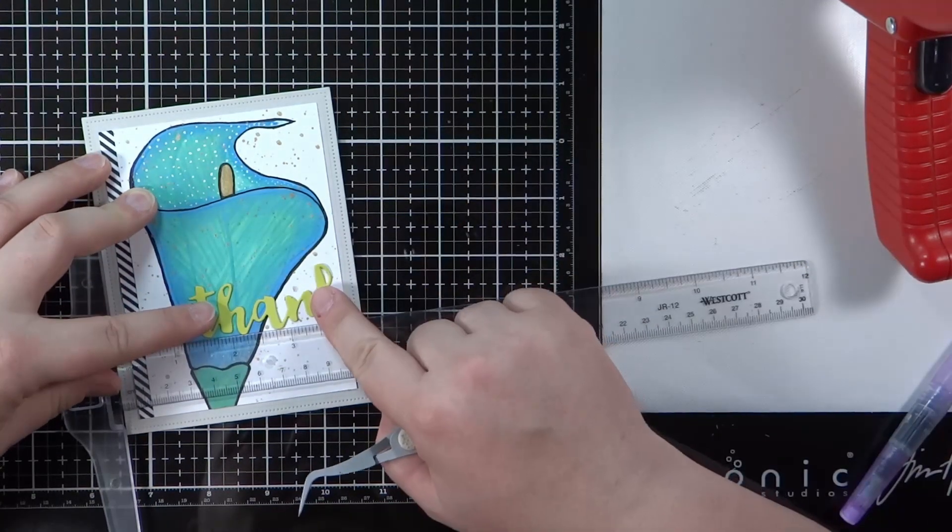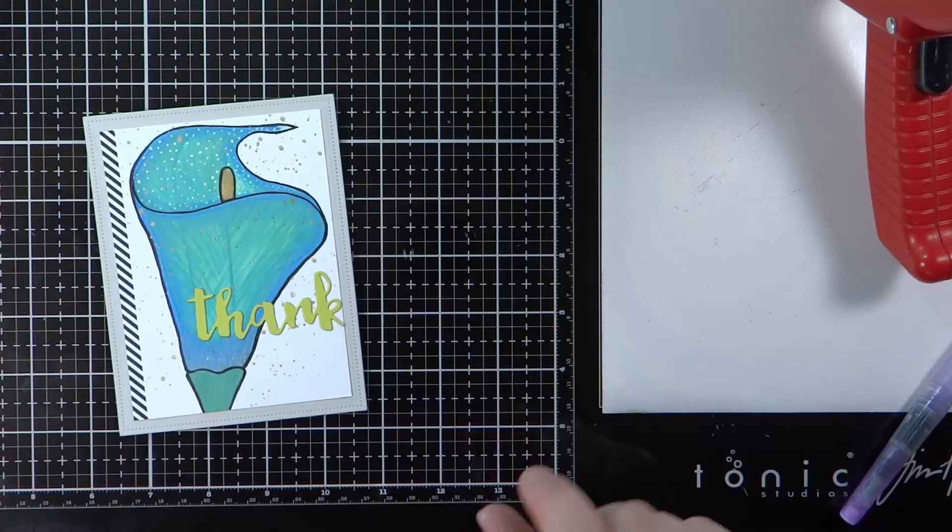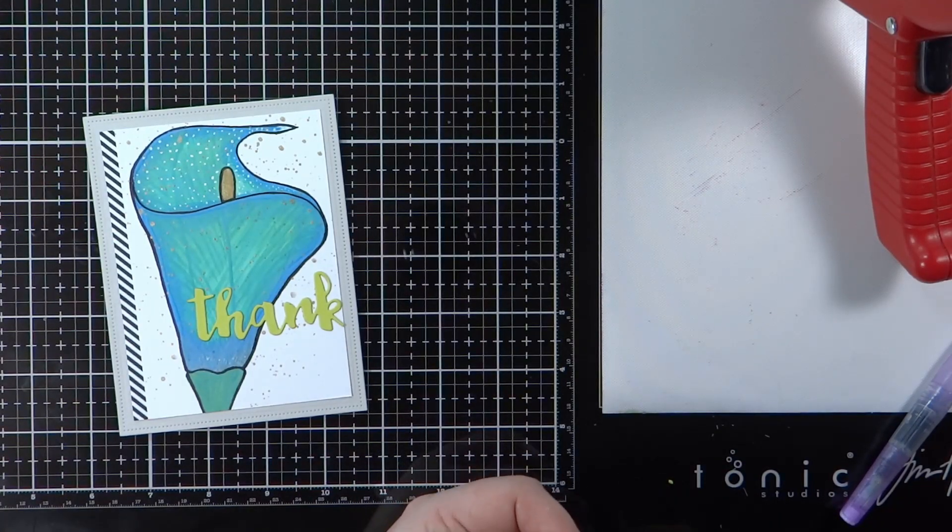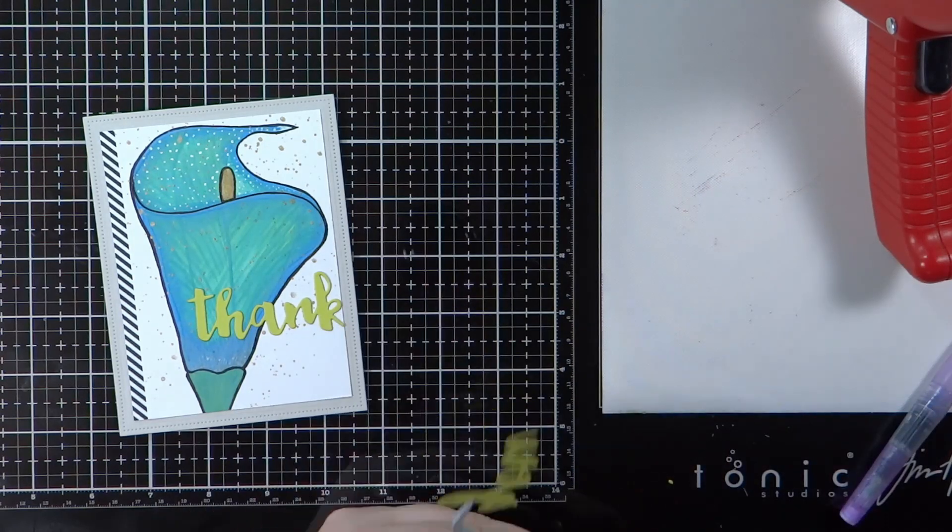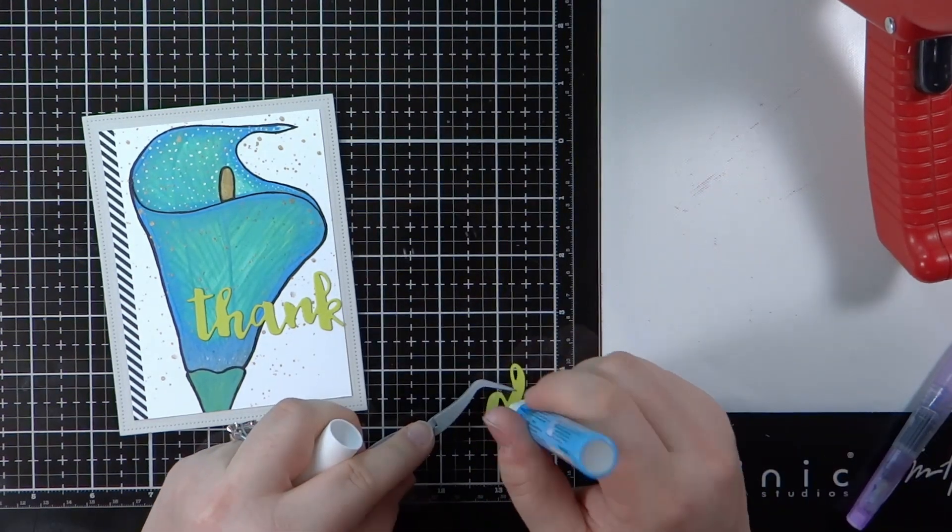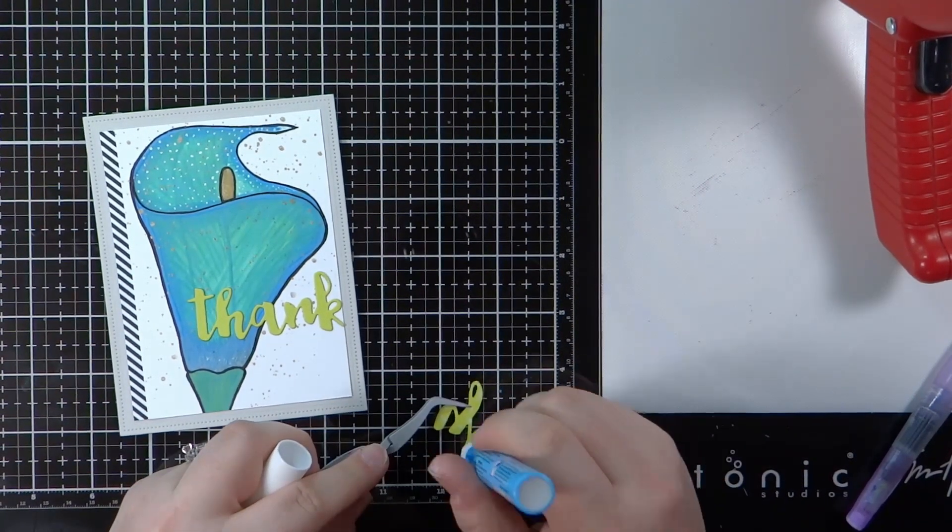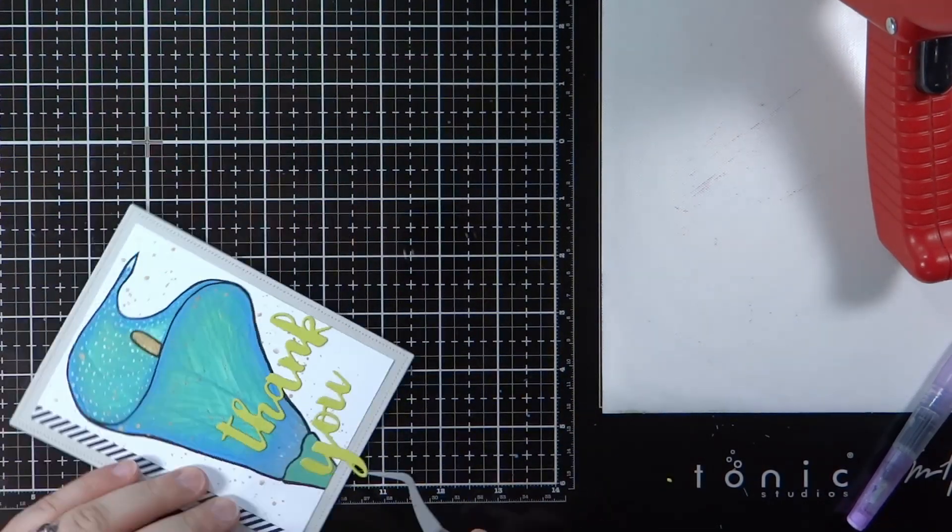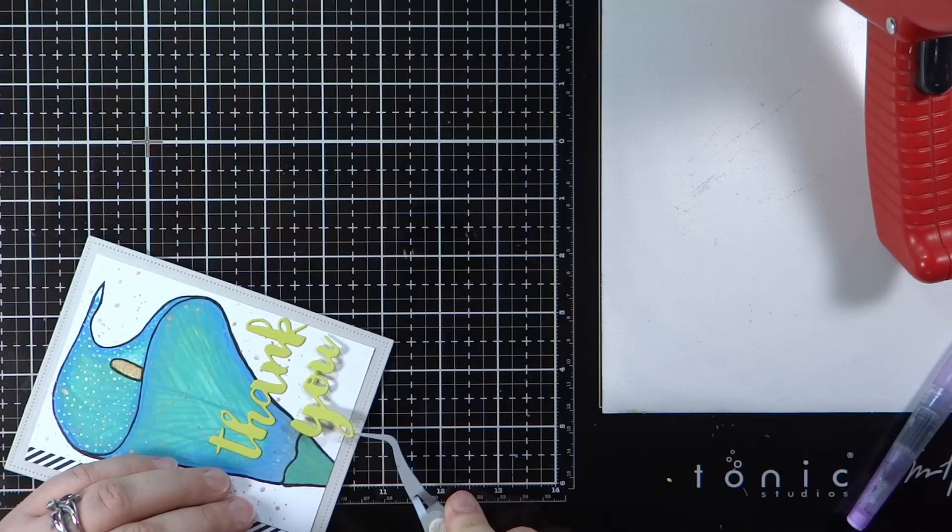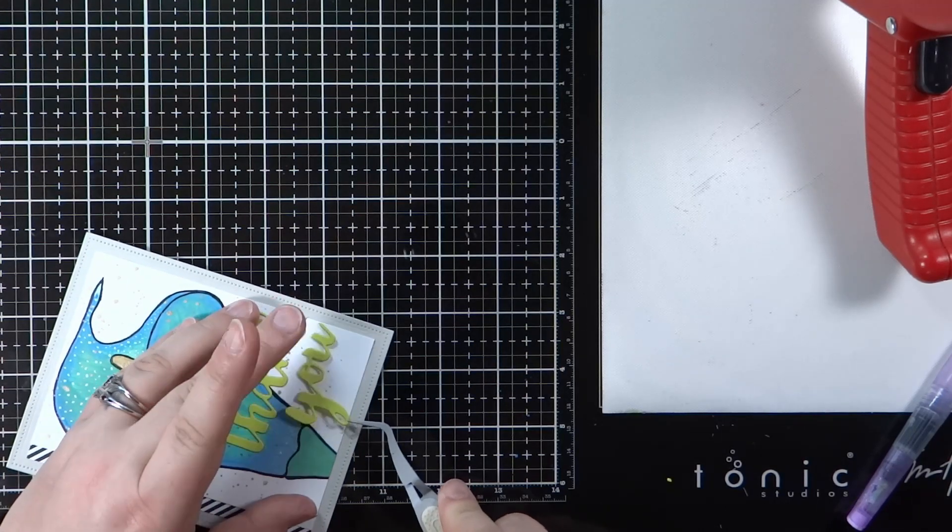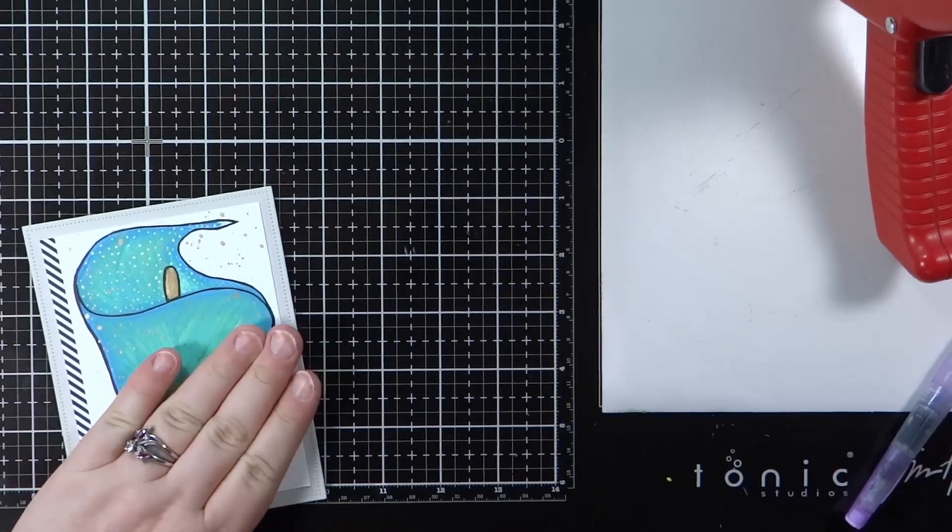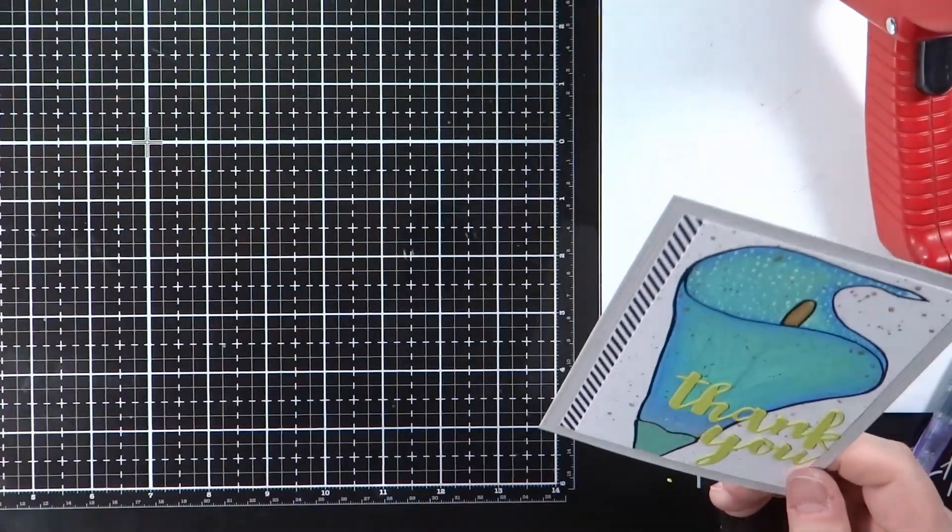I used a Concord and Ninth Thank You die. And I'm going to use my T-Ruler to line that up and make sure it's straight. And this is a paper tray ink cardstock. I don't remember the name of it right now. I'll have it listed on my blog though. And then I added a little strip of MFT black and white basics. It's one of their pattern paper packs to the left hand side.